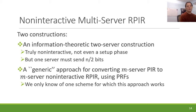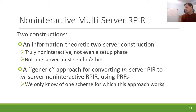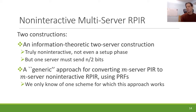In the multi-server RPIR case, you can also be non-interactive and in fact slightly better. We have two constructions. One is an information-theoretic construction with no setup phase at all: just two servers, both holding the database, and every time the client should get a random index each server sends a message, the client gets a random index, and they both send less than n bits. The other is a generic approach for converting m-server PIR to m-server non-interactive RPIR using pseudorandom functions — though we only know one example where that transformation works.